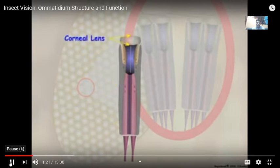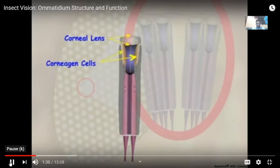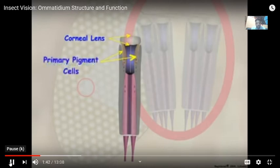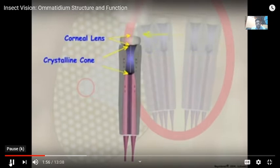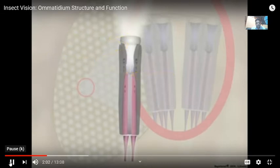The corneal lens is transparent cuticle that is secreted by two modified epidermal cells called corneogen cells. Corneogen cells secrete the corneal lens when new cuticle is formed at the time of the molt. The corneogen cells later differentiate into the primary pigment cells. Below the corneal lens is the crystalline cone, either secreted or formed by four cells called Semper's cells. Light enters the corneal lens and is focused on the light-detecting apparatus by the crystalline cone.